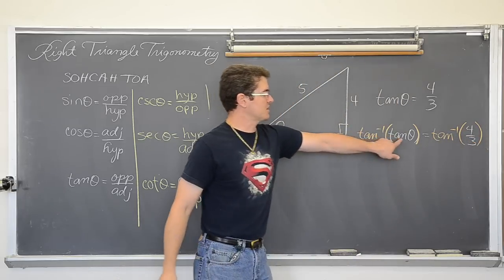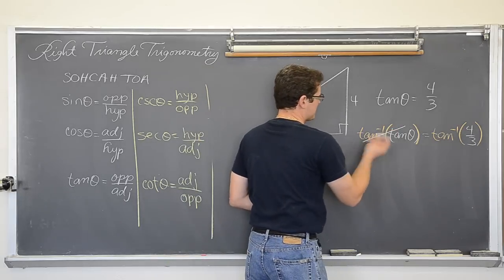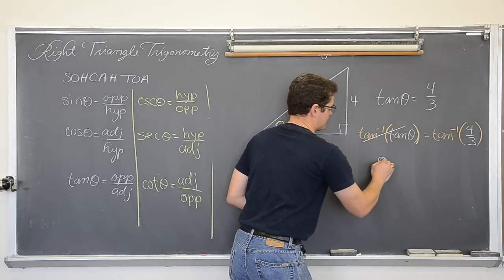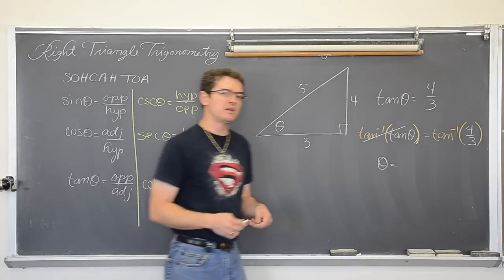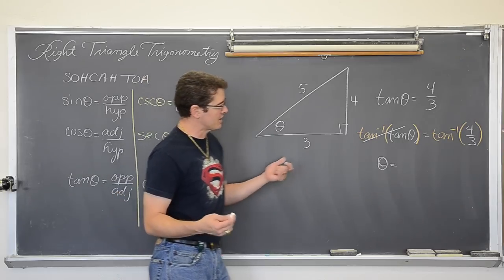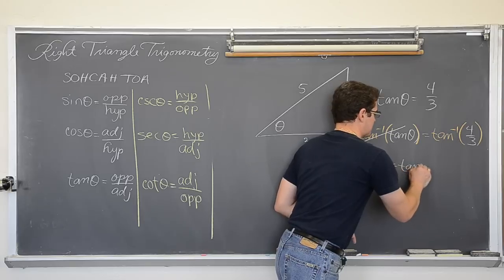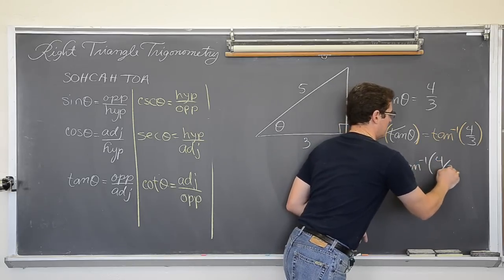And the tangent function and the inverse tangent will cancel each other out. And that is why this is sort of a teaching step. You don't necessarily have to show this for just doing right triangular trigonometry. But theta is going to be the inverse tangent of 4 thirds.